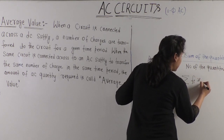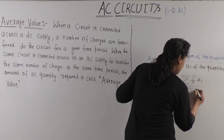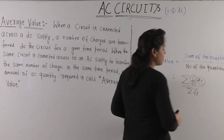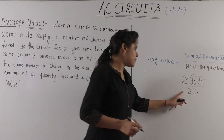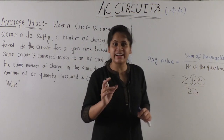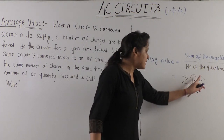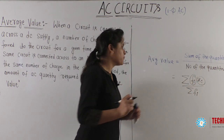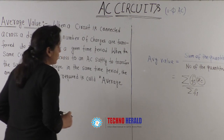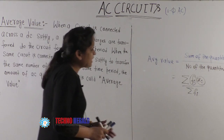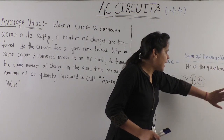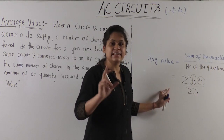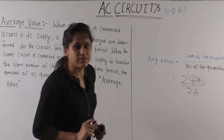The formula is Sigma Fi Xi divided by Sigma Fi, where Xi is the value and Fi is the frequency. Sum of frequencies gives the total number of data, and Xi gives the value of the particular data. Average value means something similar to this — I will tell you how it is similar. First, let us go to the definition of average value.